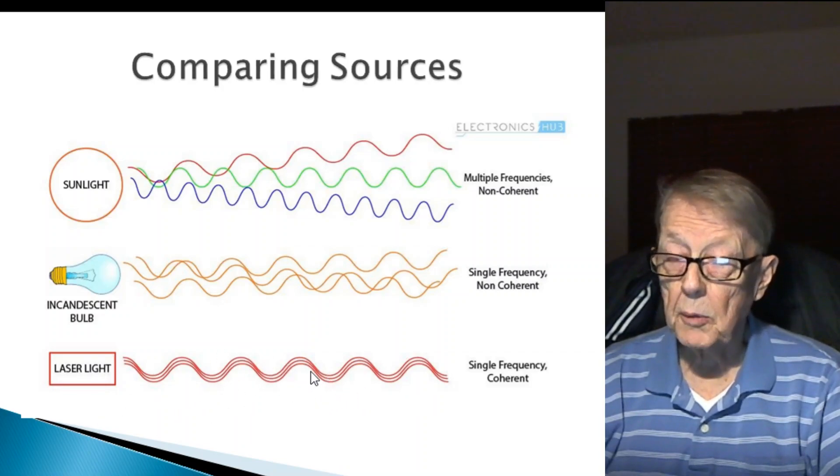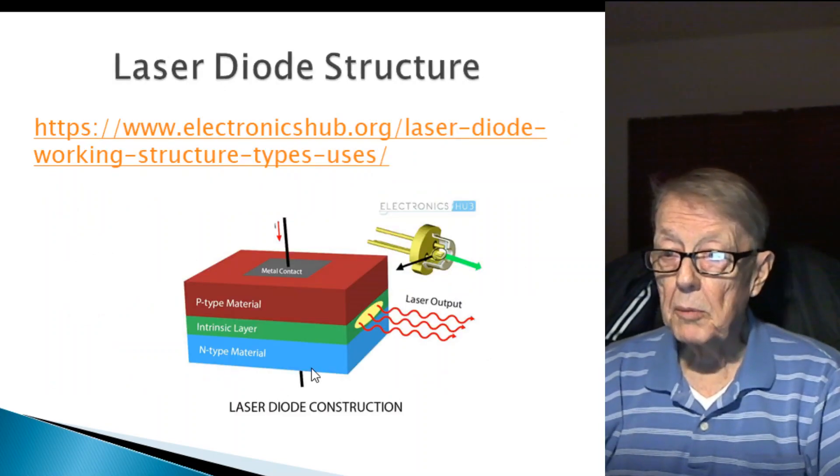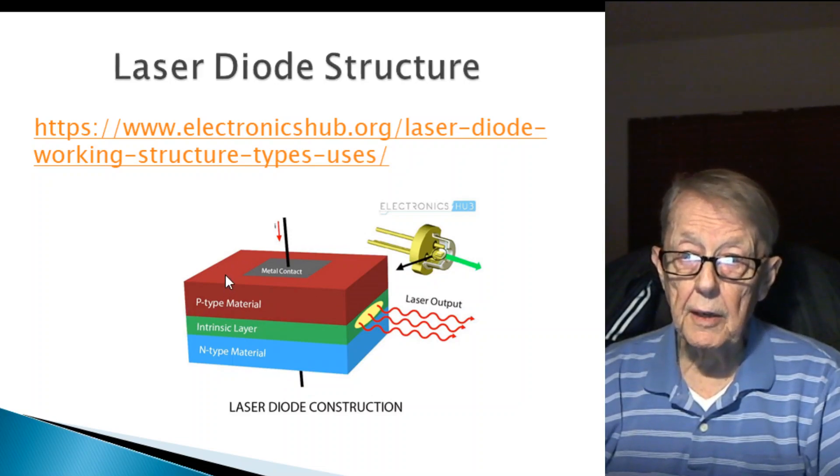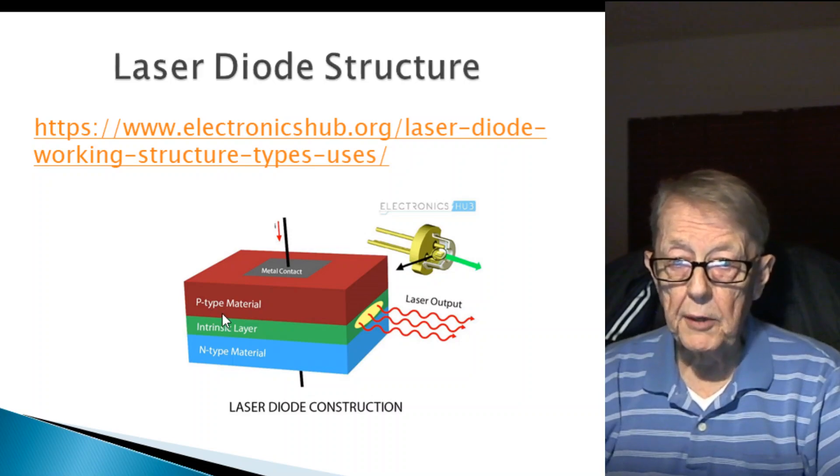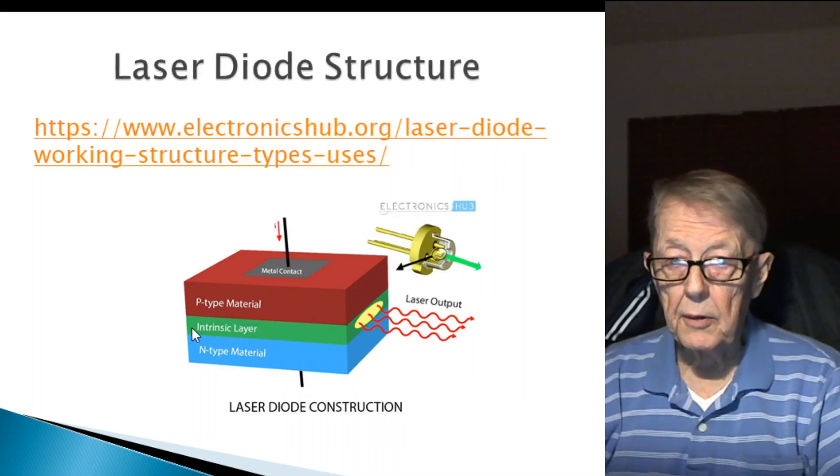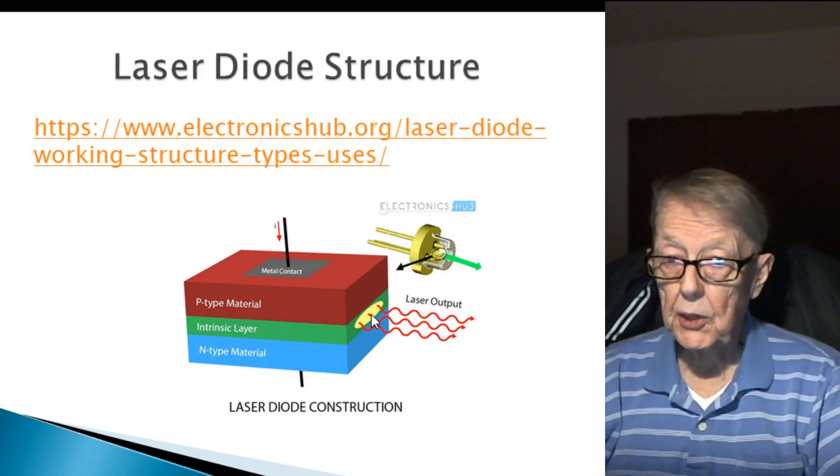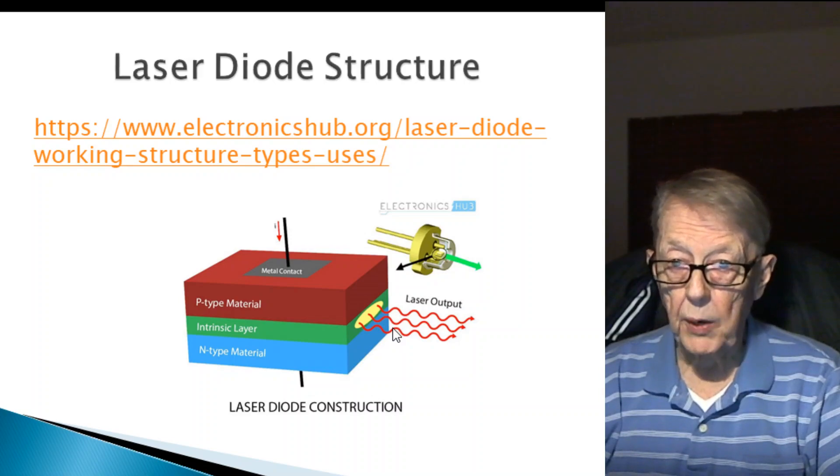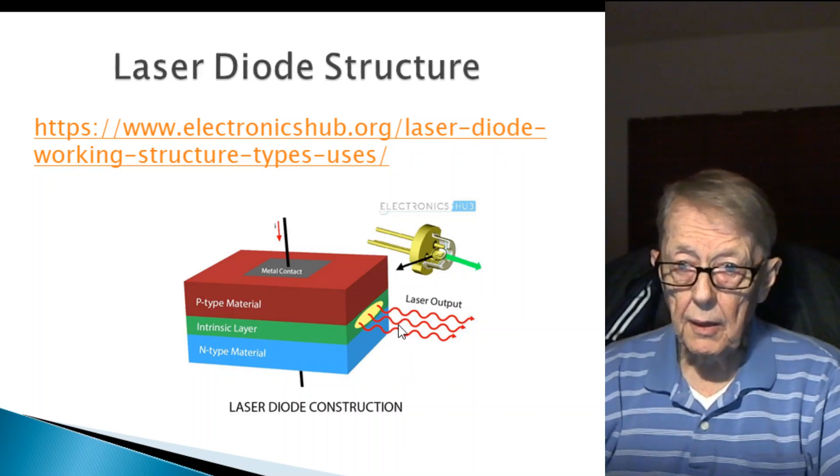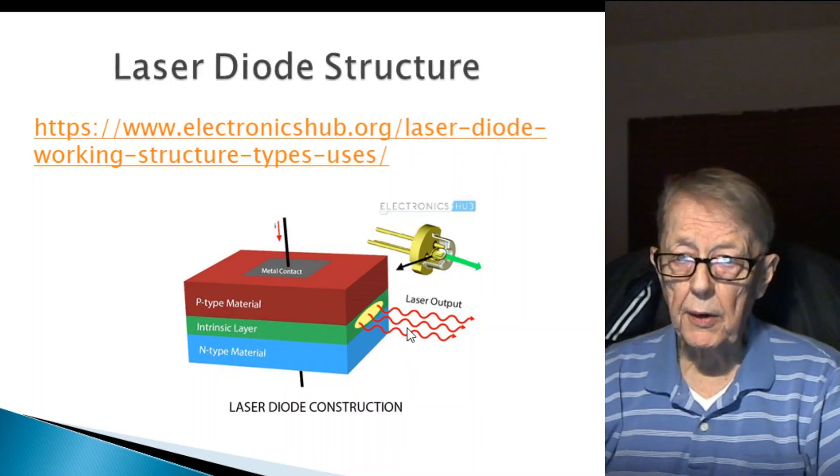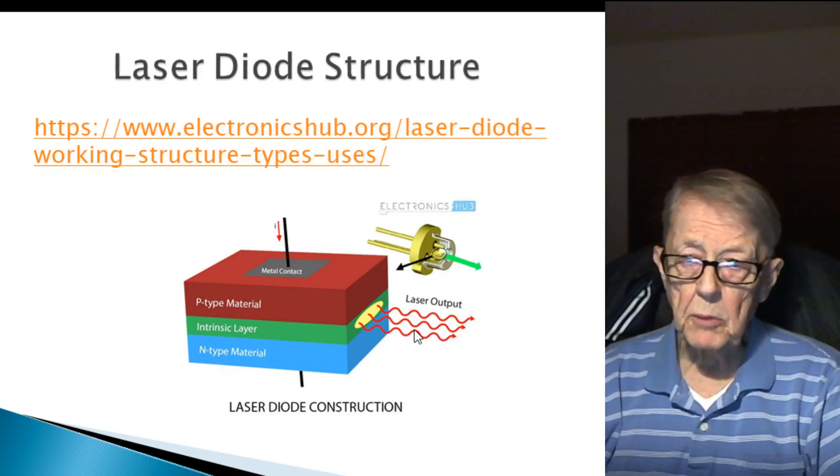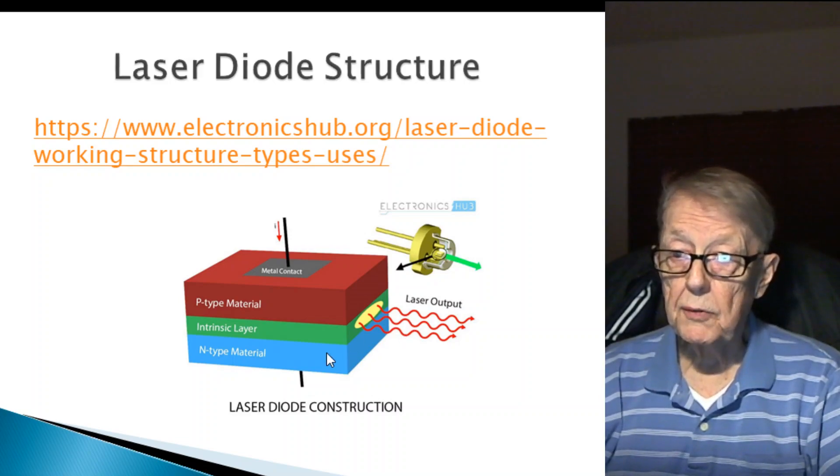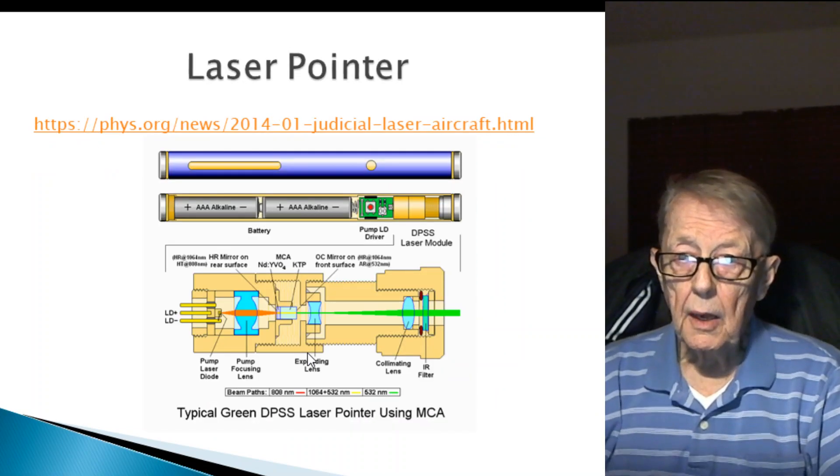Now, this is a typical structure of the laser diode itself. P-type material, N-type material, and an intrinsic layer. And they're clearly showing, whoever drew this, clearly shows that it emits red light that's in phase. That's coherent light. It doesn't show it moving in all directions, but it generally does move in all directions.